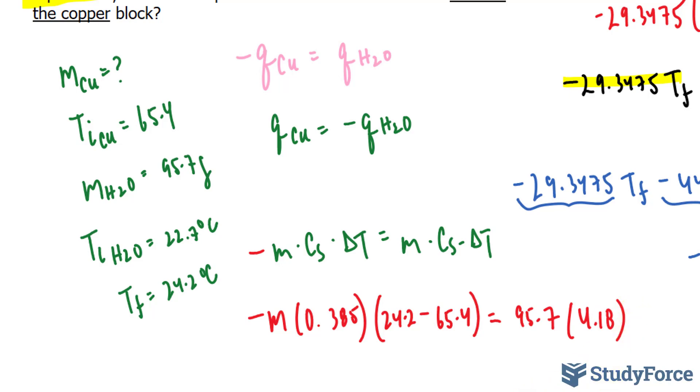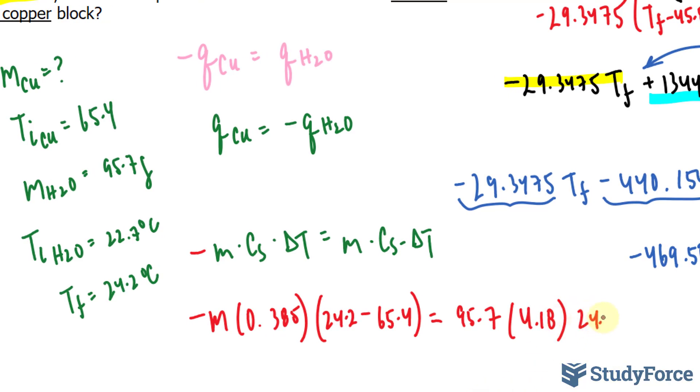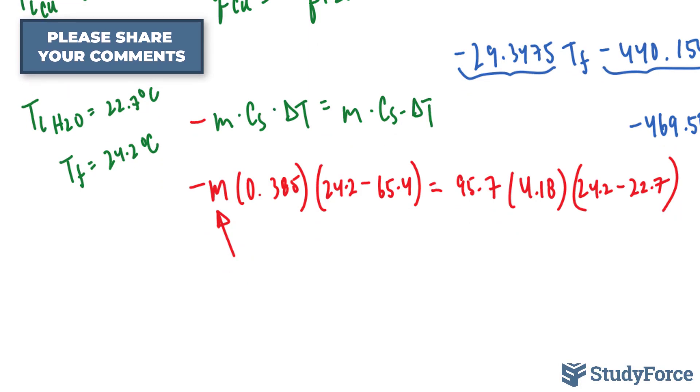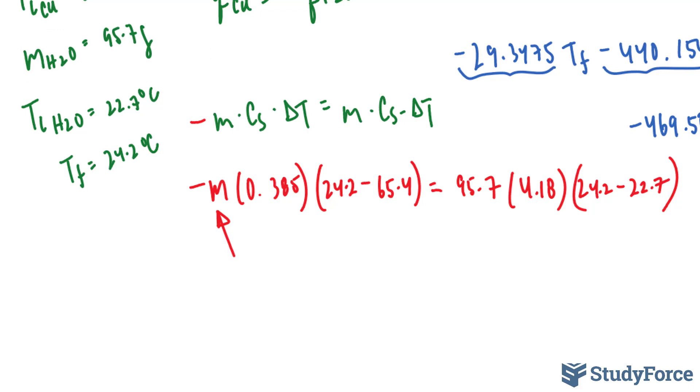Delta T can be found by taking the final, which is 24.2, and subtracting it from 22.7. Now we can find out what M is equal to. This is actually a simple calculation relative to question number one. In question number one we had to do a lot of algebra. Here, all we have to do is multiply these two numbers, multiply all three of these numbers, and divide the product of these three numbers by the product of these two.